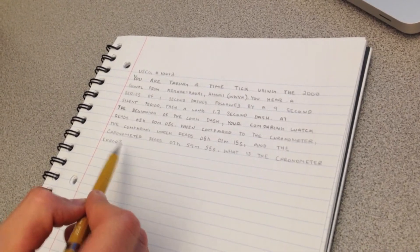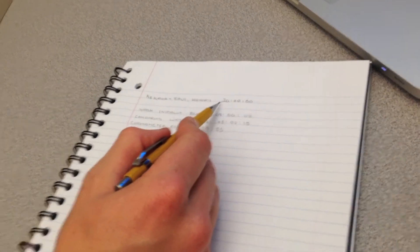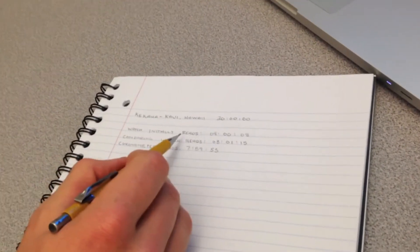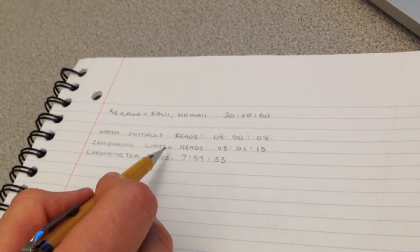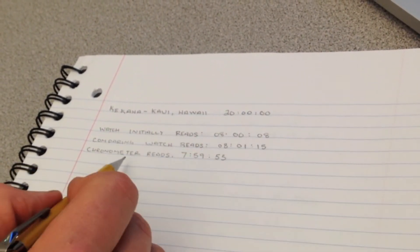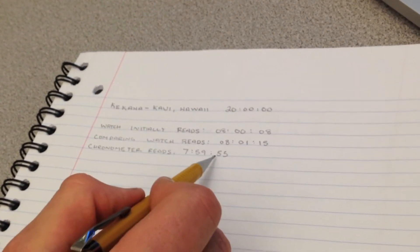What is the chronometer error? In this problem, the only information that you need is the time at Hawaii, which is 20-hundred. The watch initially reads 08, 00, 08. The comparing watch is 08, 01, 15, and the chronometer is 07, 59, 55.